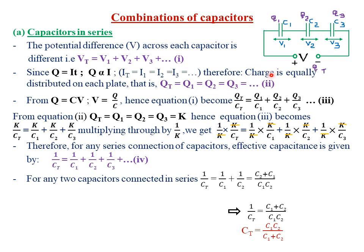That is, the charge is equally distributed on each plate. So Q total — the total charge through this particular battery — must be equal to the charge across the first capacitor, must be equal to the charge across the second capacitor, must be equal to the charge across the third capacitor.